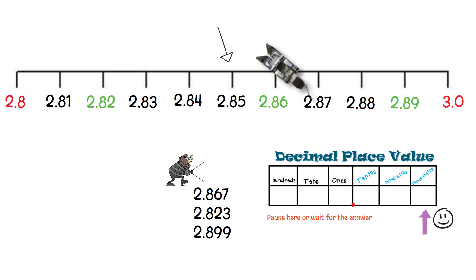2.867 is between 2.86 and 2.87. The seven in the thousandths place is greater than the halfway mark, so it should be closer to 2.87. So, 2.867 is about right here.